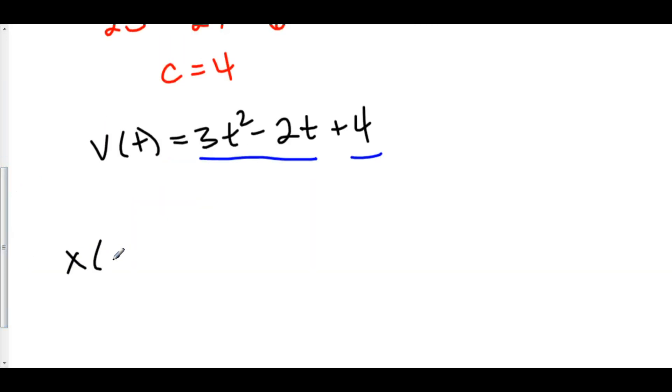Now let's go back up to position from velocity. So my position is equal to the antiderivative of velocity, which would be t cubed minus t squared plus four t plus c.